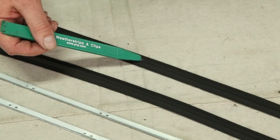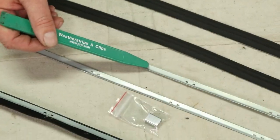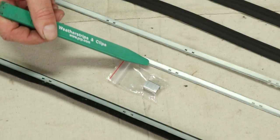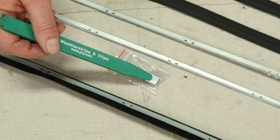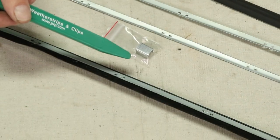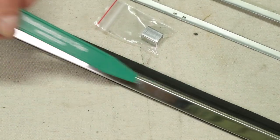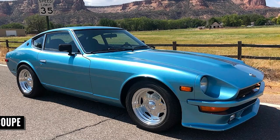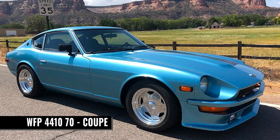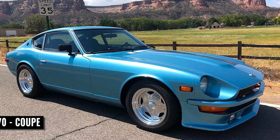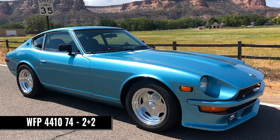This kit contains the rubber strips, the metal retainers, and the staples to do the outer belt lines on both doors. You will reuse your outer chrome moldings. Part number is WFP 4410-70 that fits the coupes and the WFP 4410-74 fits the 2 plus 2 models.